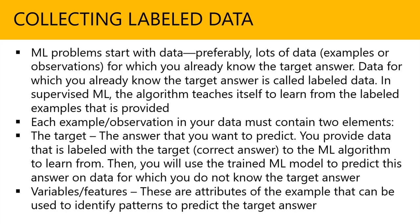So how do we go about collecting labeled information? Typically, data is raw, kept in repositories, backup tapes, or databases in different places. Machine learning problems start with data, and that's important because without data, you can't really predict. Everything is based on historical data, and then using machine learning, we can predict the outcome. So preferably lots of data — examples or observations for which we already know the target answer.